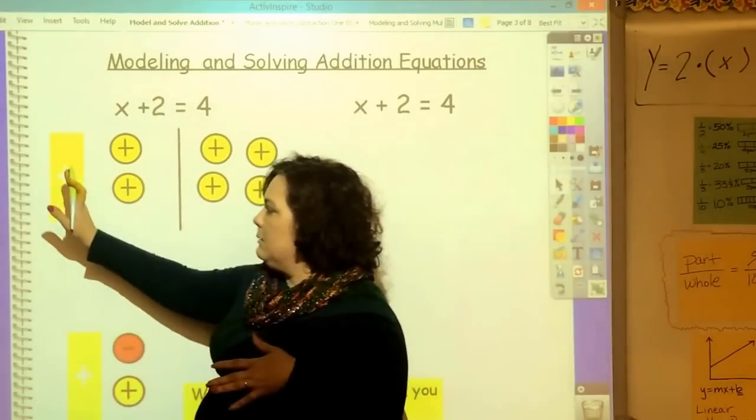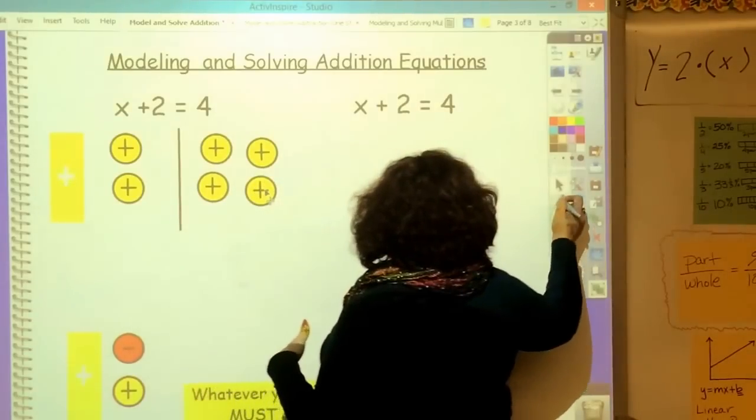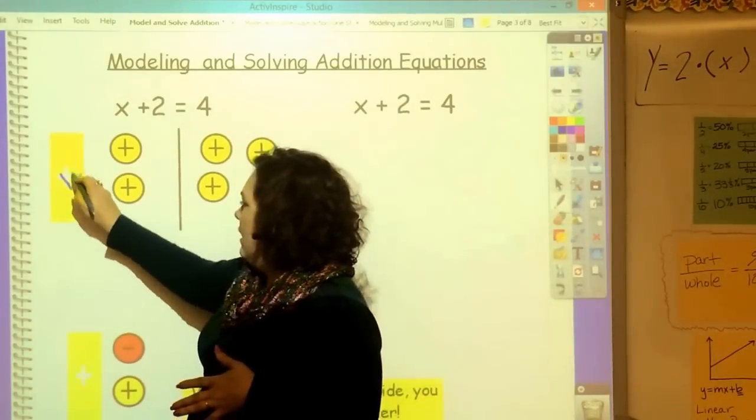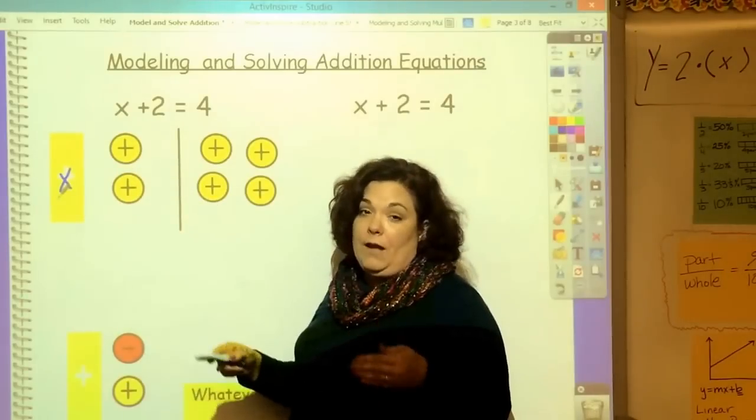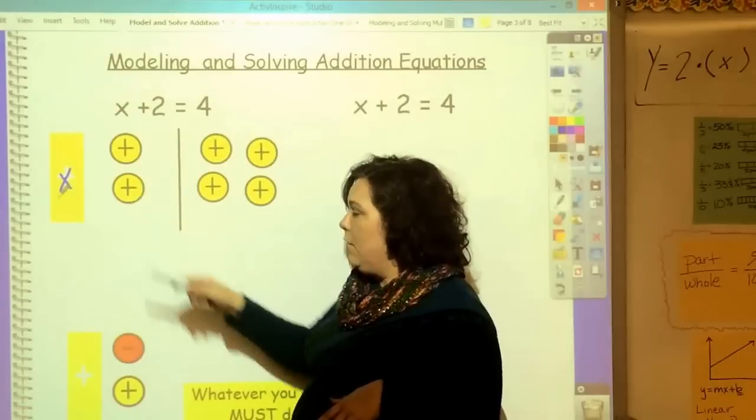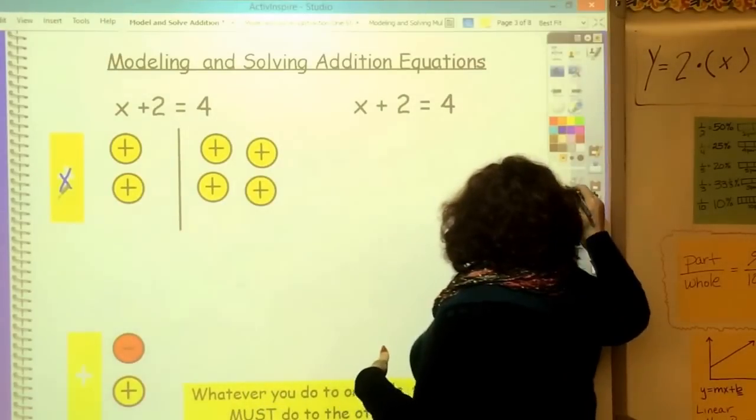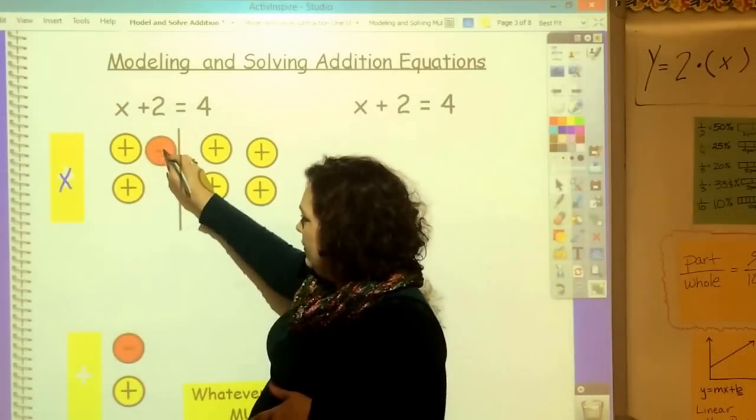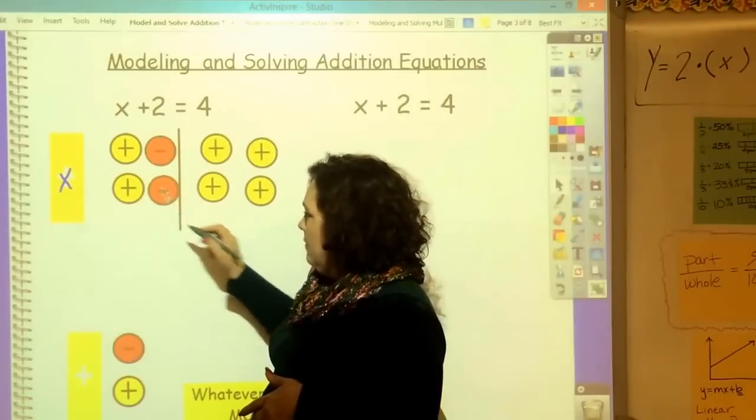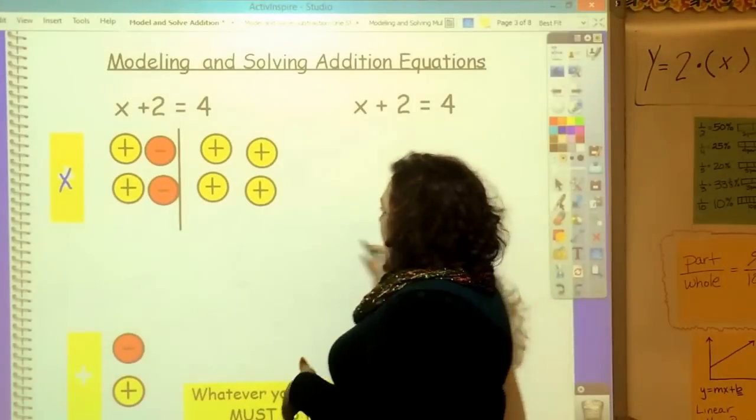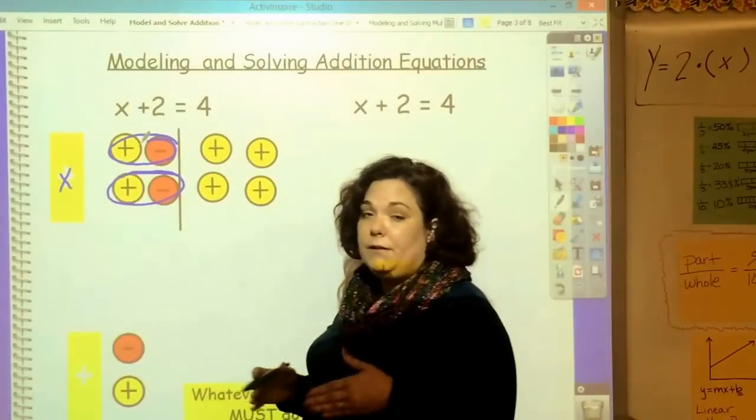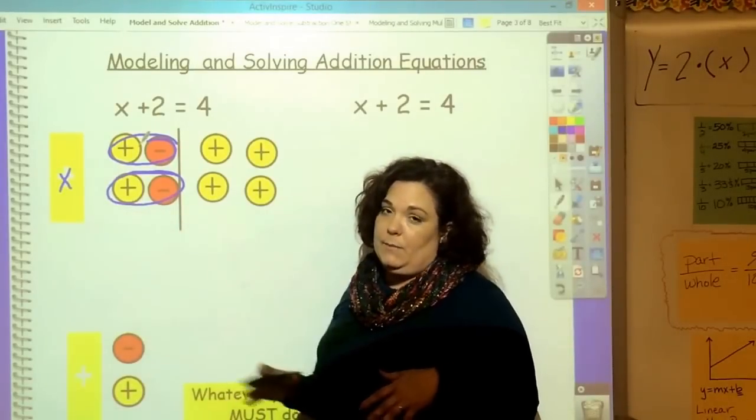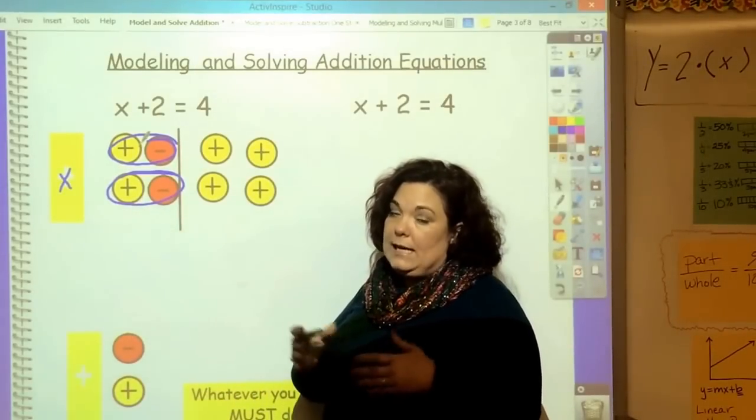I want to get my x by itself. To get rid of these, I have to undo them. They are positive, so the opposite to undo them is negative. As you remember from the integer video, this gives you zero pairs. I have zeroed that out, and now x is by itself.